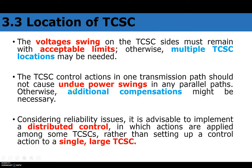TCAC control actions in one transmission path should not cause undue power swings in any parallel paths. Control actions must not cause additional power swings; otherwise, additional compensators might be necessary. Only one TCAC at one location is not a wise idea. We have to consider additional compensators at multiple locations. Considering reliability, it is advisable to implement distributed control so that actions are coordinated among all TCAC units rather than relying on a single large TCAC.